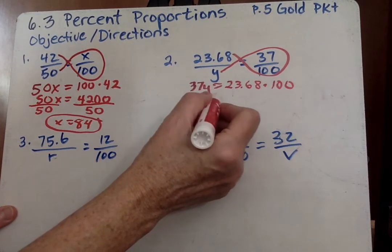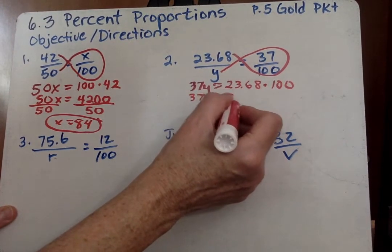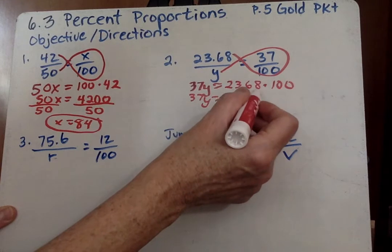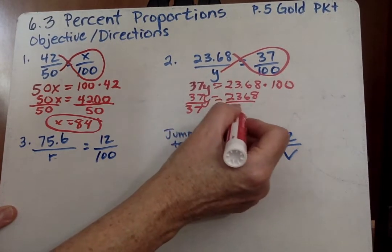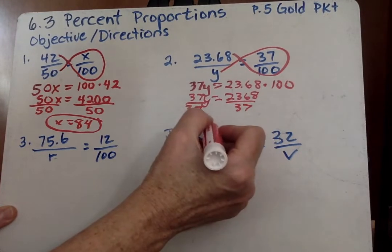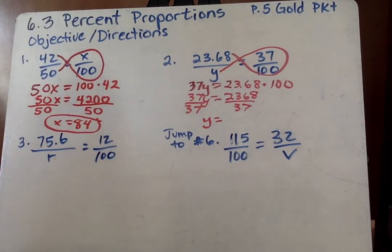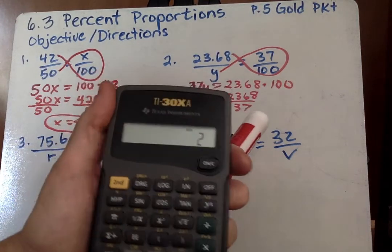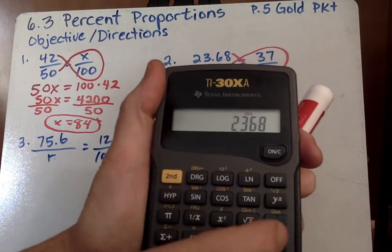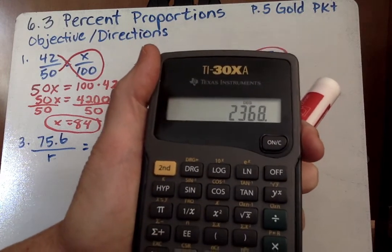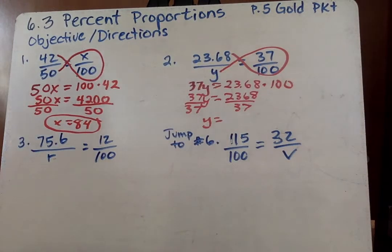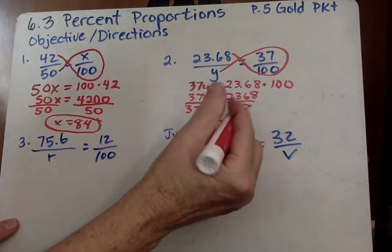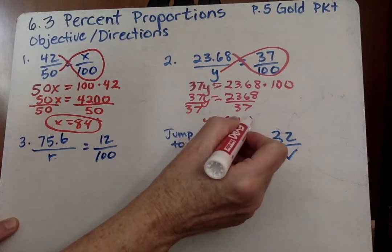23.68 times 100. And 37y equals, when I multiply that out, it's going to be 2368. Then I'm going to divide by 37. Divide by 37, y equals. Again, I take my handy dandy calculator. 2368 divide by 37. Always put the top number in first. 64.